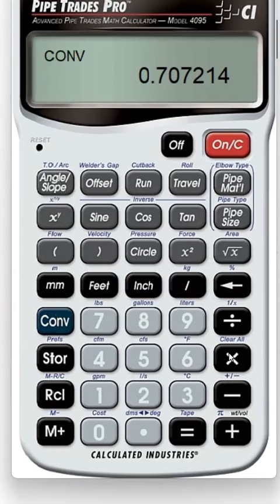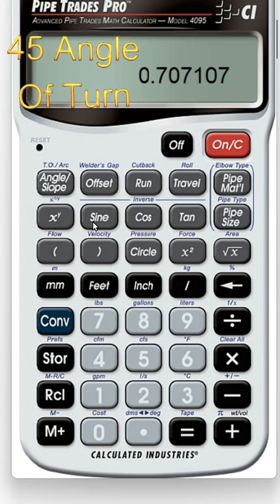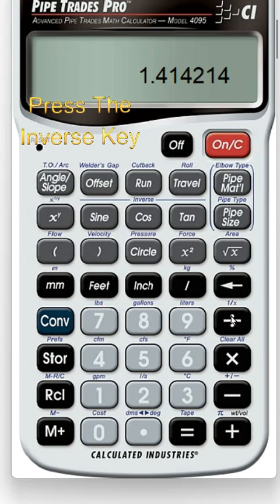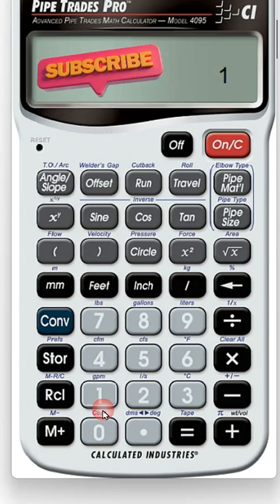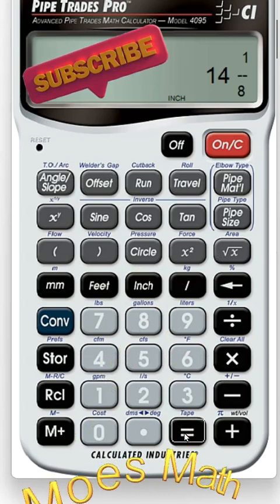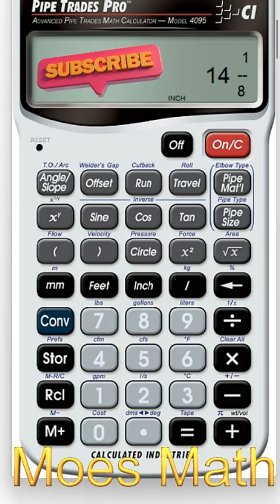With our calculator, we could go convert clear, go 45 and get sine. But that's not the number we want. We want the inverse. Convert, 1 over x, 1.414 times 10 inches gives us a travel of 14⅛ inches.